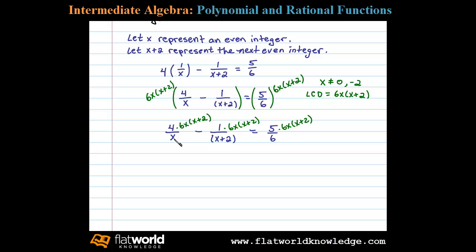Okay, the first term here, the x cancels and that'll leave us with 24 times (x+2). Minus the (x+2) cancels, so minus 6x will be equal to 5x times (x+2). And what we're left with here is a quadratic equation.